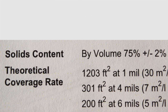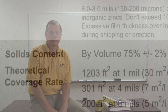The second value, the solids by volume, is taken right off the product data sheet. It's typically expressed as a percentage. This value represents the non-volatile or non-evaporating components of a coating, such as the resin, pigment, and additives.